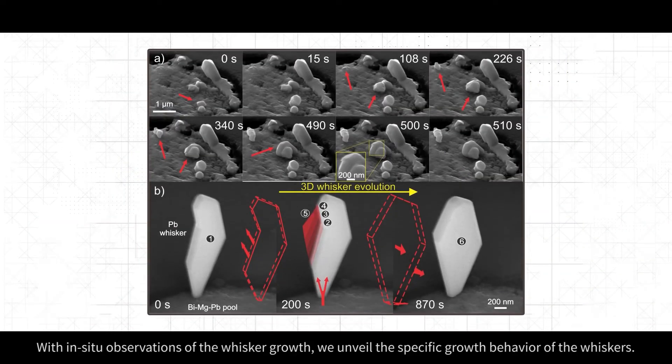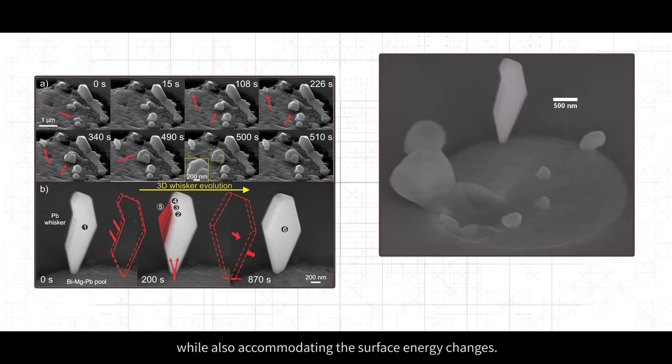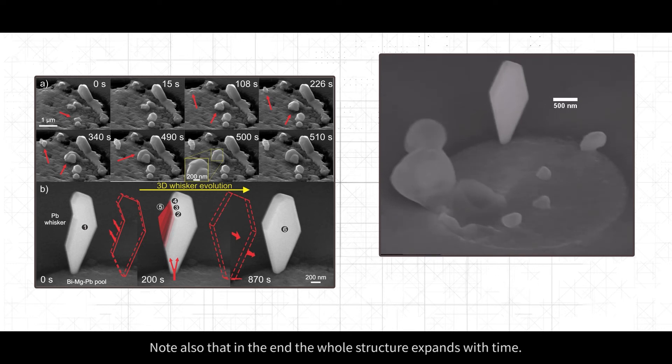With in-situ observations of the whisker growth, we unveil the specific growth behavior of the whiskers. The remarkable example presented in the video displays the clear growth of the whisker in a form of a plate that grows in a stepwise manner to release the build-up pressure, while also accommodating the surface energy changes. Note also that in the end the whole structure expands with time.